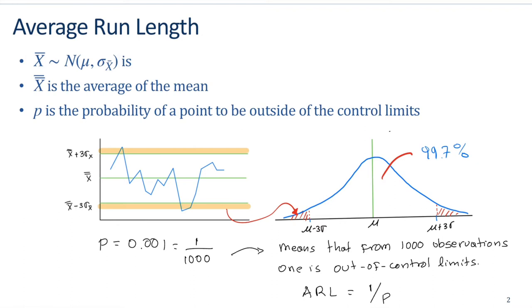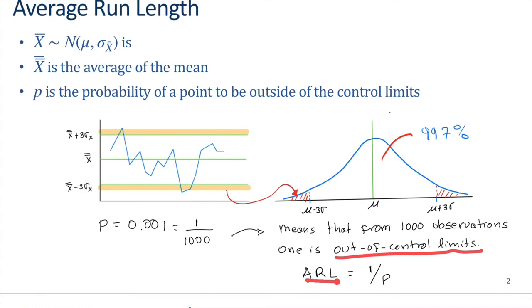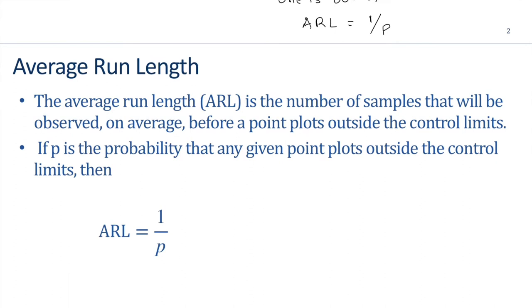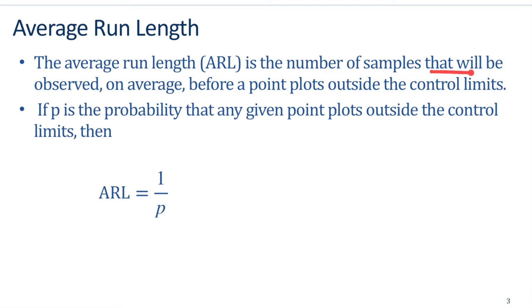This is for a population with standard deviation sigma. The difference here is that we have the standard deviation of a sample, so this distance will vary slightly. Now let's say that the probability of being outside this point is 0.001 — in other words, 1 over 1000 — so that means that from 1000 observations, one point is out of the control limits.